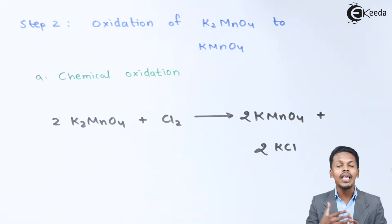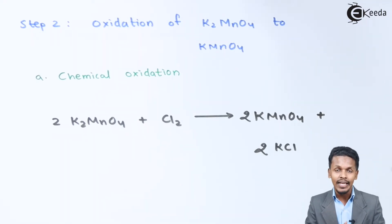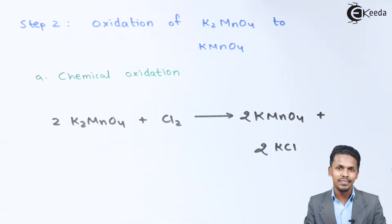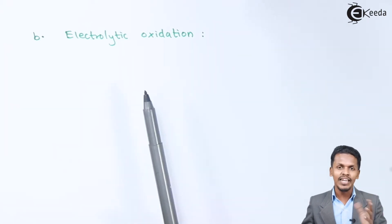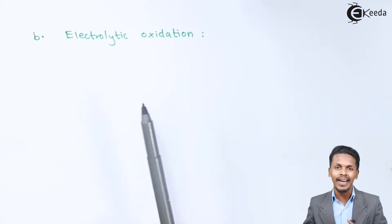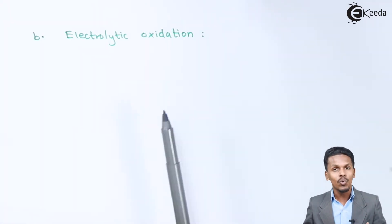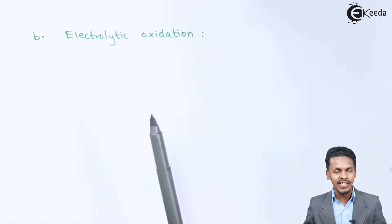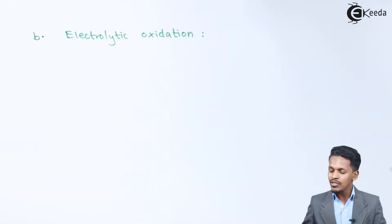If we need to obtain KMnO4 that is pure as well as highly efficient, let me introduce the next reaction — electrolytic oxidation. In electrolytic oxidation, the K2MnO4 (potassium manganate) obtained in step one is introduced into a cell that consists of two iron rods — one anode and one cathode — and is dissolved in water.